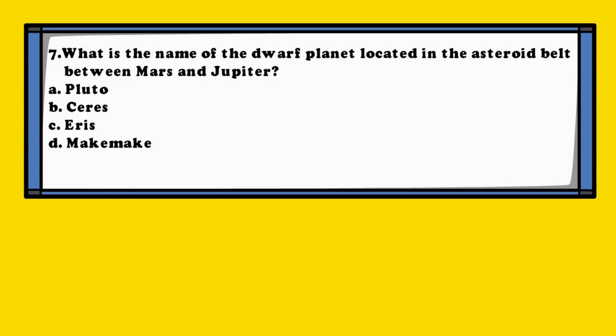Question 7. What is the name of the dwarf planet located in the asteroid belt between Mars and Jupiter? A. Pluto, B. Ceres, C. Eris, D. Makemake.